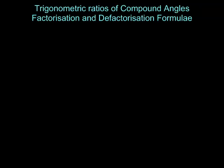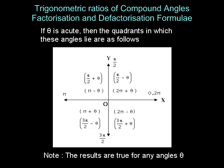The above results can be remembered using the following approach. We assume theta is an acute angle, but note that the results hold for all angles theta. If theta is acute, then pi by two minus theta and 2 pi plus theta lie in the first quadrant; pi by two plus theta and pi minus theta lie in the second quadrant; pi plus theta and 3 pi by two minus theta lie in the third quadrant; and 3 pi by two plus theta, minus theta lie in the fourth quadrant. There are two rules.